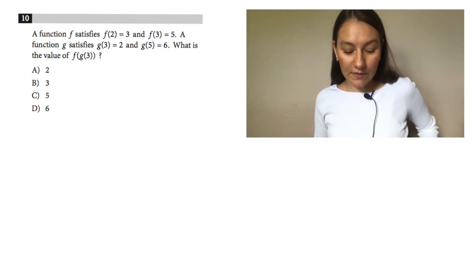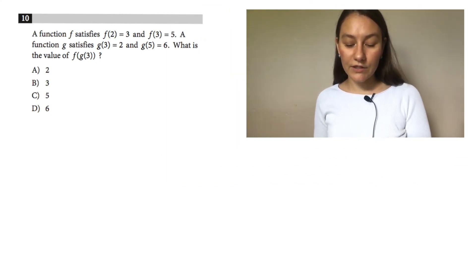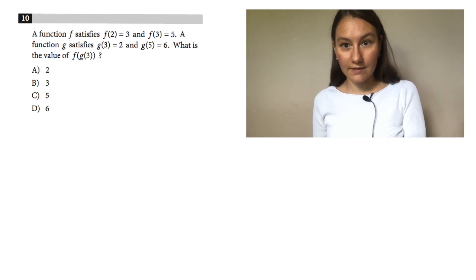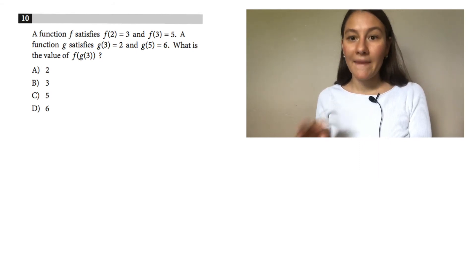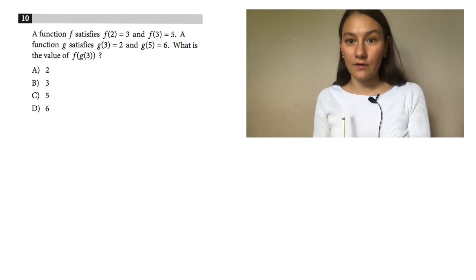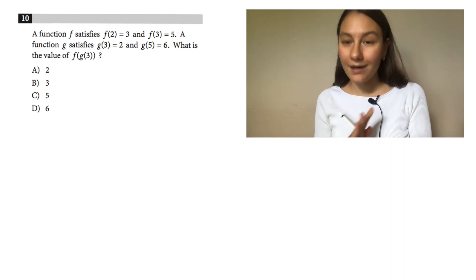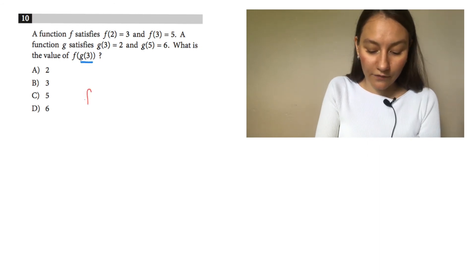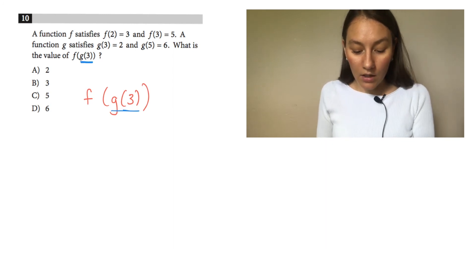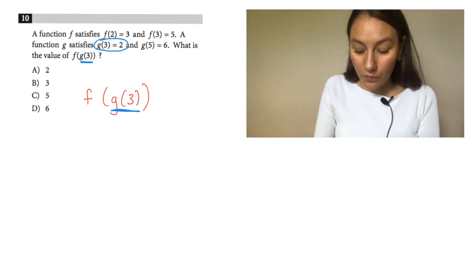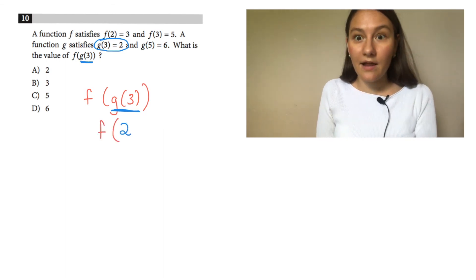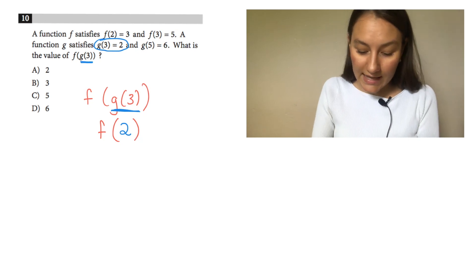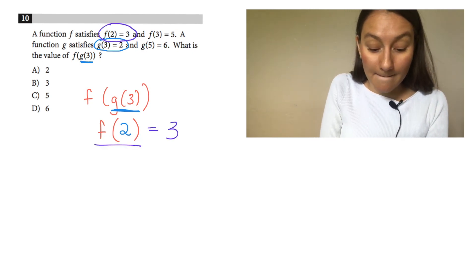One step harder. A function f satisfies f of 2 is 3 and f of 3 is 5. A function g satisfies g of 3 is 2 and g of 5 is 6. What is the value of f of g of 3? When you have a function within a function, start from the inside. What is g of 3? They told us g of 3 is 2. So now I'm finding f of 2. They told us f of 2 is 3. So the answer is 3.